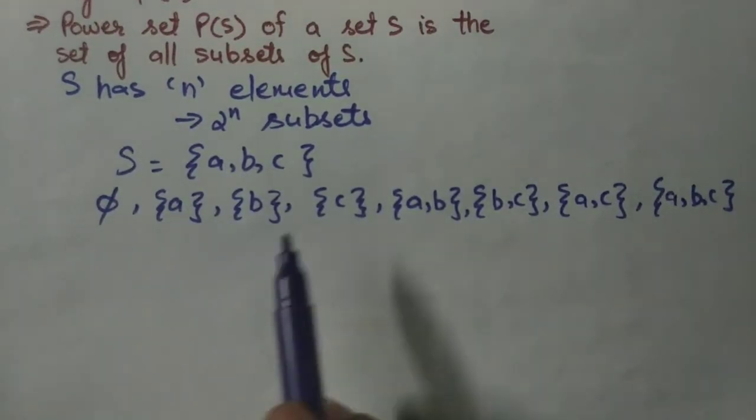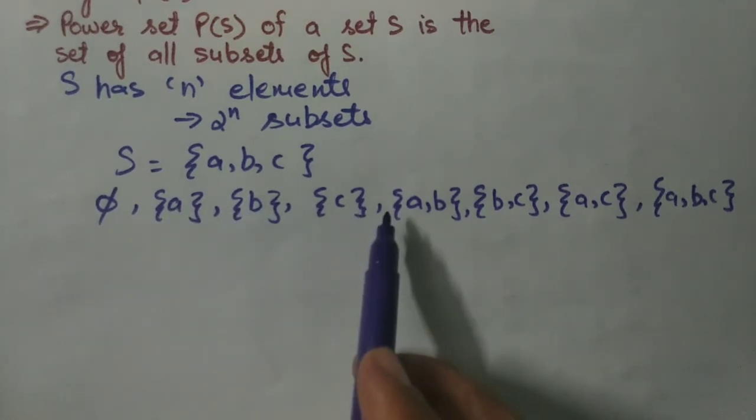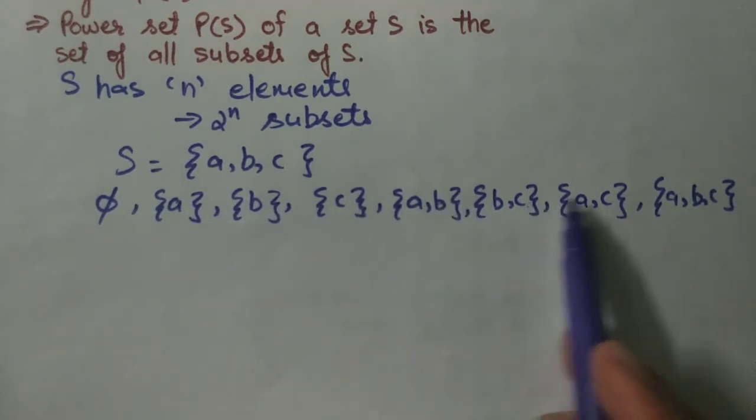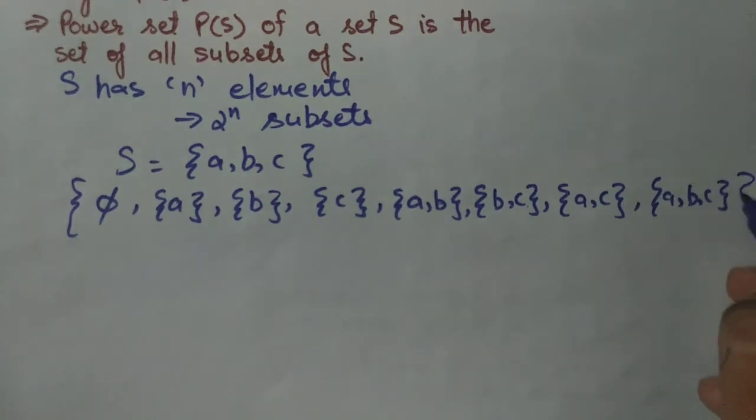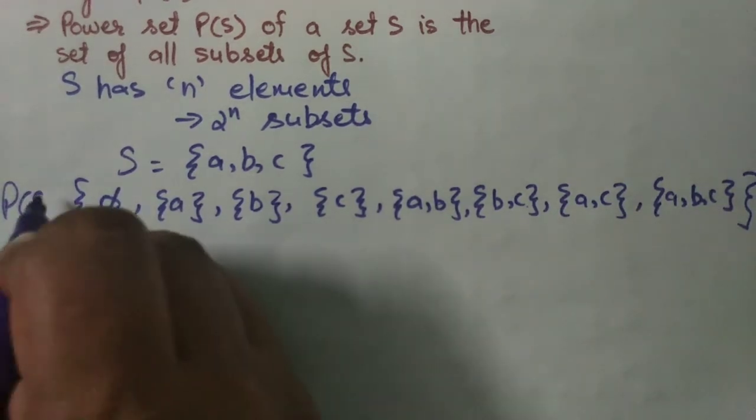So as you can see here, these 8 sets are the subsets of this set S. And set of all of these subsets is called power set of set S.